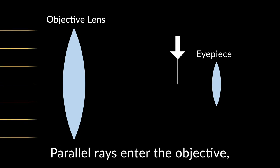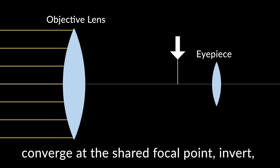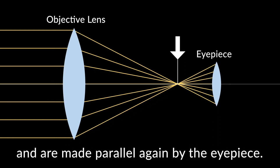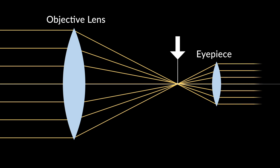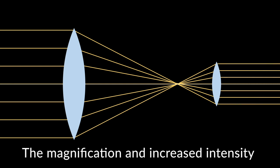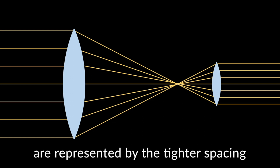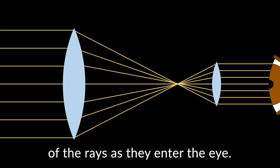Parallel rays enter the objective, converge at the shared focal point, invert, and are made parallel again by the eyepiece. The magnification and increased intensity are represented by the tighter spacing of the rays as they enter the eye.